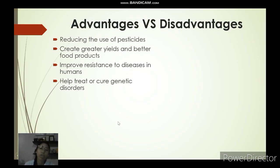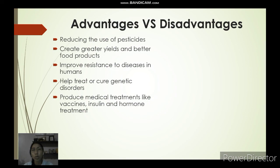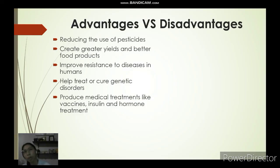Another advantage is that genetic engineering can help treat or cure genetic disorders — technologies now exist to detect and potentially eliminate genes that code for cancer. GMOs can also produce medical treatments like vaccines, insulin, and hormone treatments. Instead of relying on limited natural production of insulin from animals, which is costly and ethically problematic when demand is high, using GMOs is a more humane option.